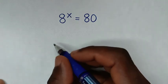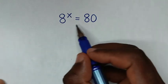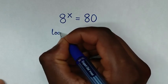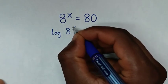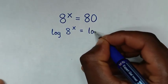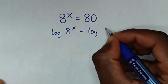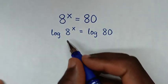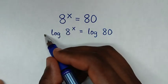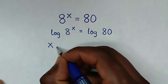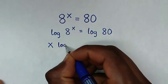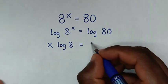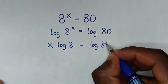In the first step, we'll apply log on both sides. So it will be log of 8 to the power of x is equal to log of 80. Then, in the next step, this power of x will move to the base, so it will be x times log of 8 is equal to log of 80.